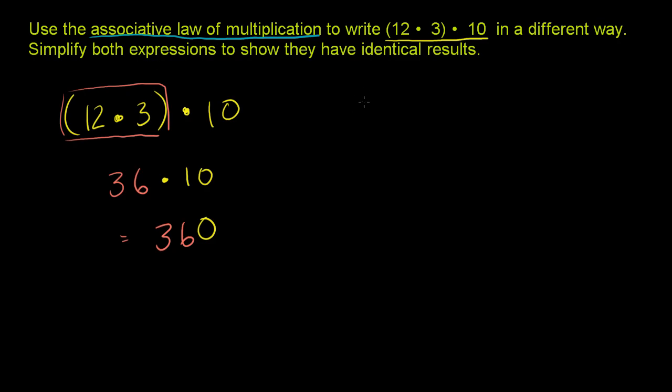So let me write it down again. If we were to do 12 times 3 times 10, if we just wrote it like this without parentheses, if we just went left to right, that would essentially be exactly what we just did here on the left. But the associative law of multiplication says, you know what, we can multiply the 3 times 10 first, and then multiply the 12.